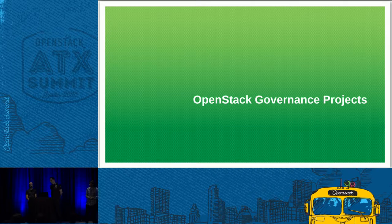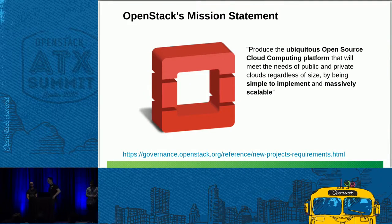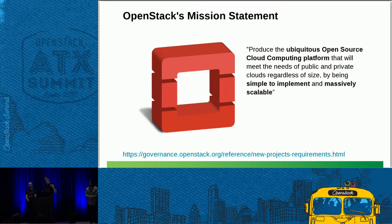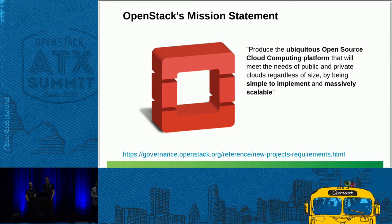Before getting into the nitty-gritty details on how to actually do it, here's a little bit of theory. When you think about creating a new project, the main thing to think about initially is how your mission or vision correlates with the OpenStack mission. The OpenStack mission is to produce the ubiquitous open-source cloud computing platform — public and private cloud, simple to implement and massively scalable. This gives you a lot of opportunity to think about how your project resonates with that mission.